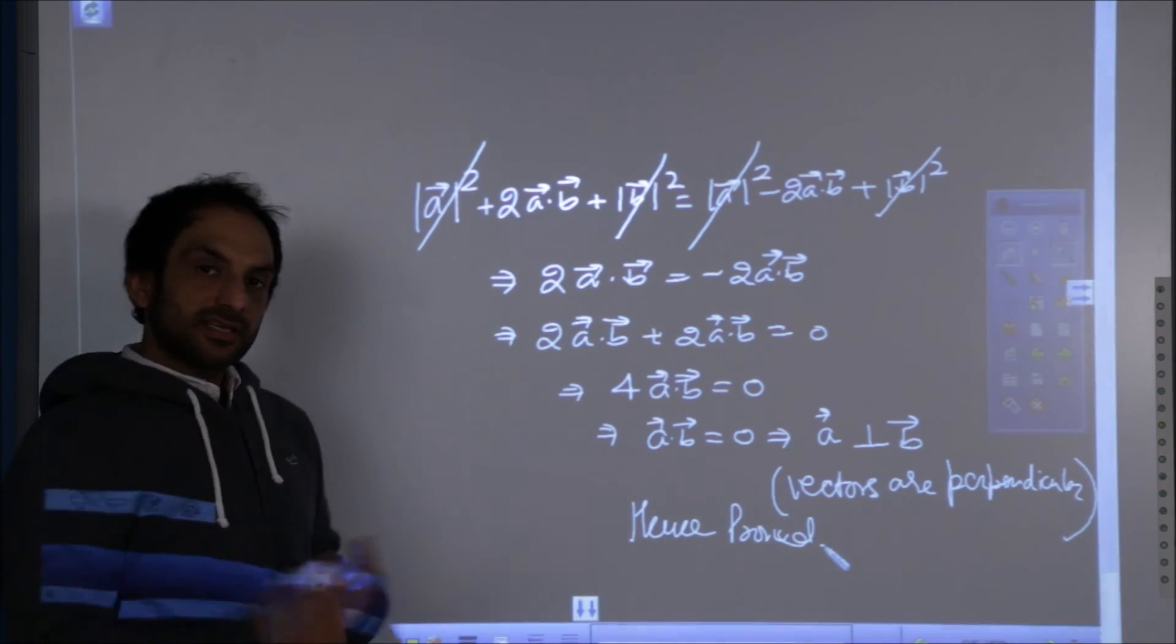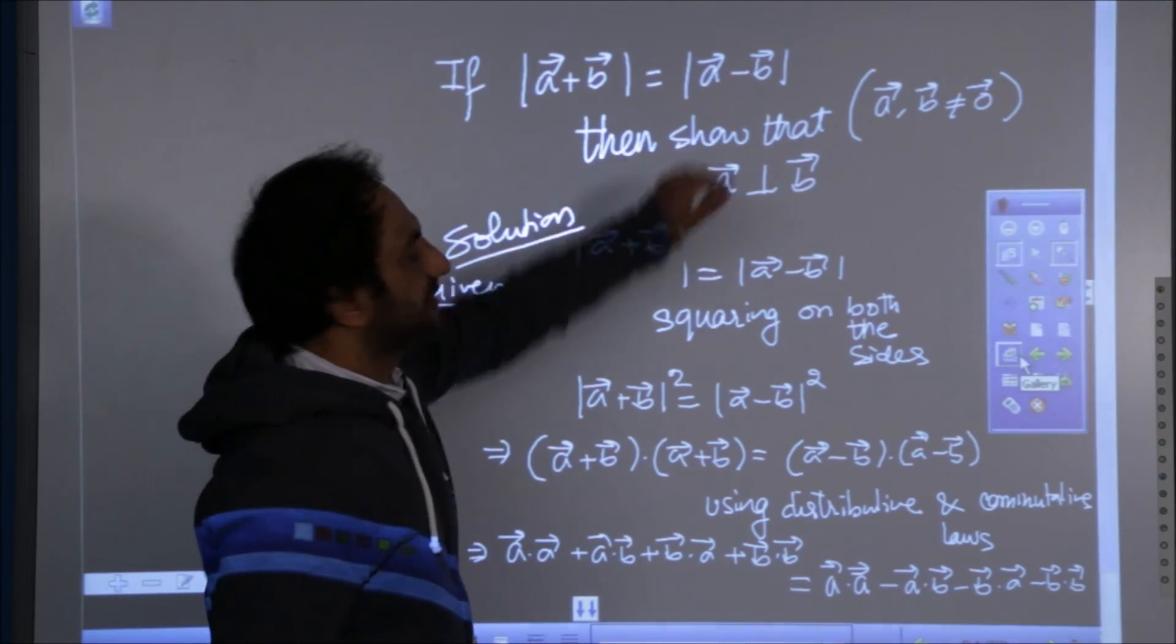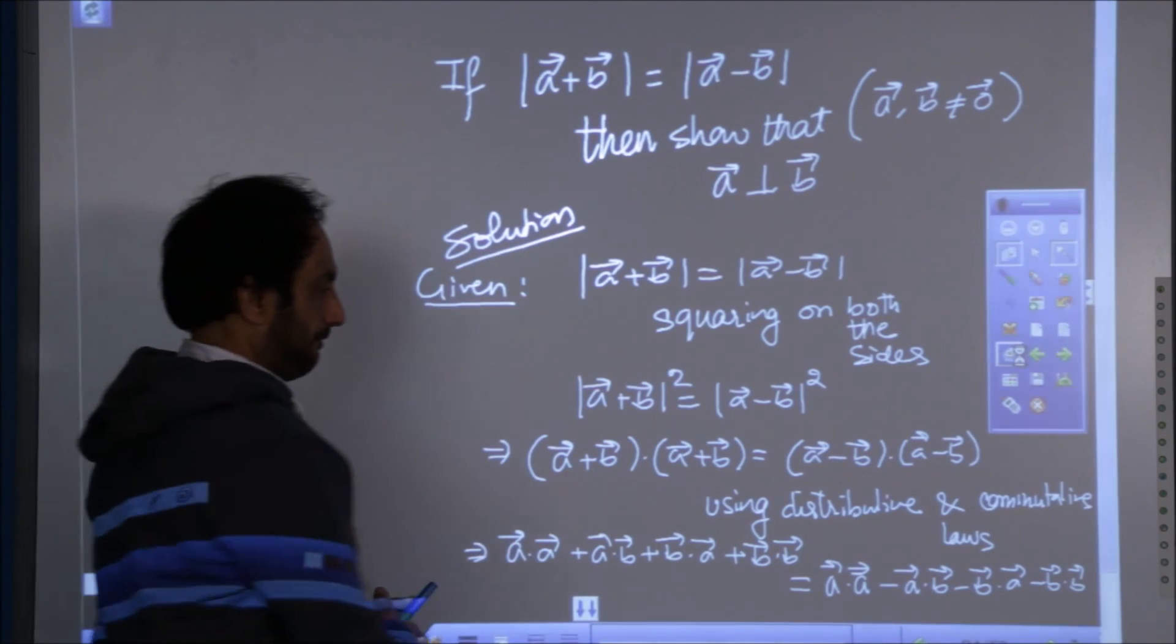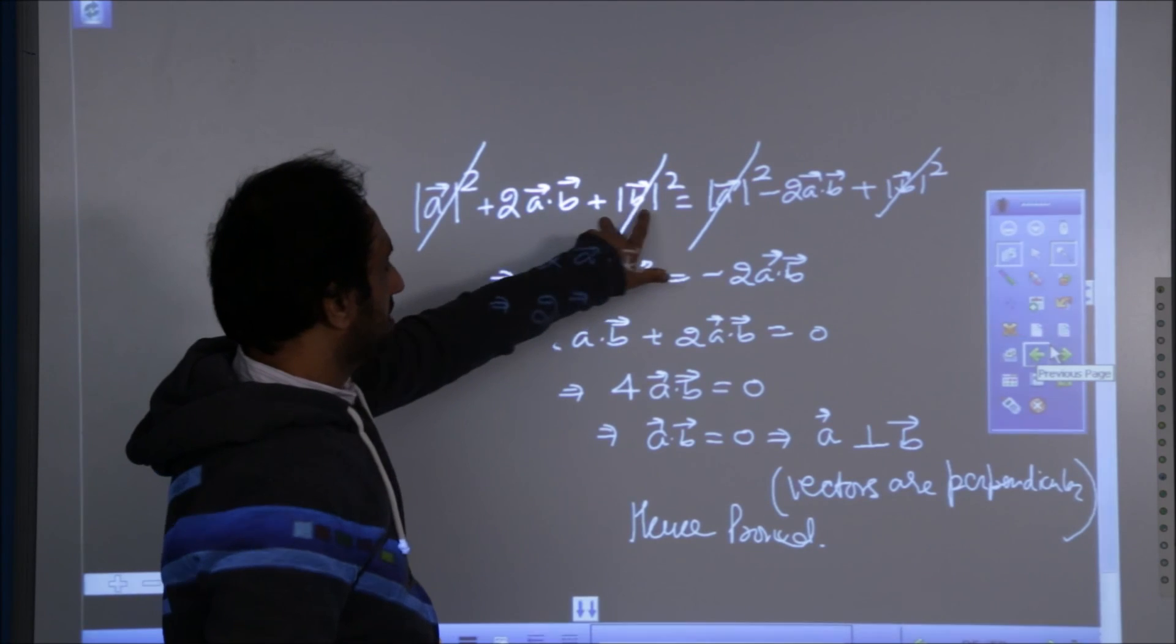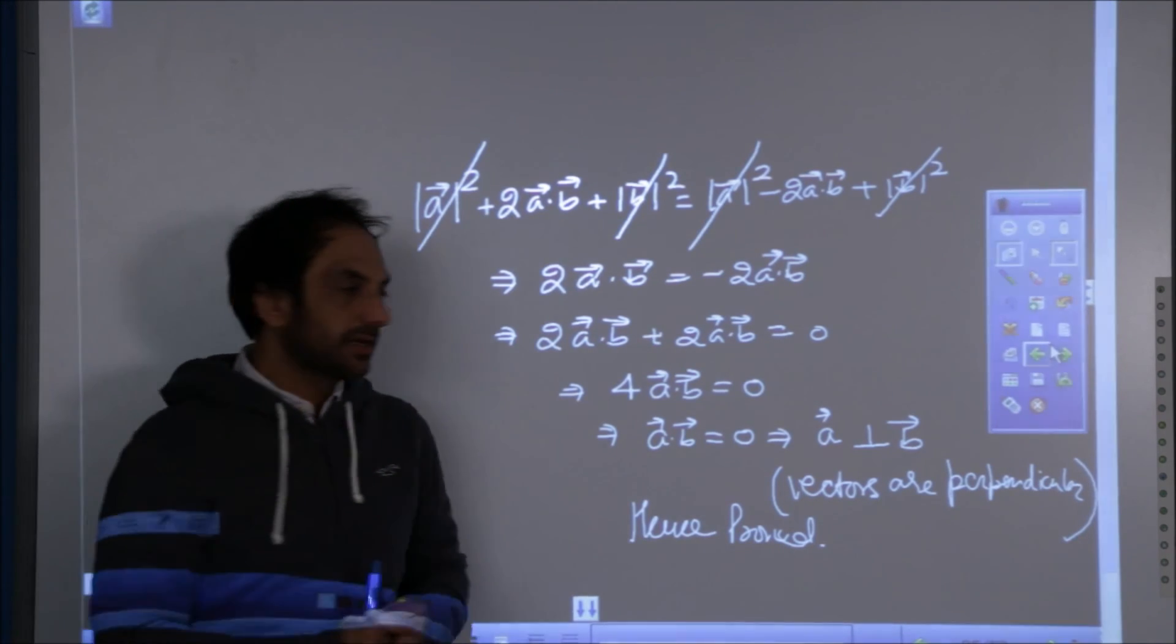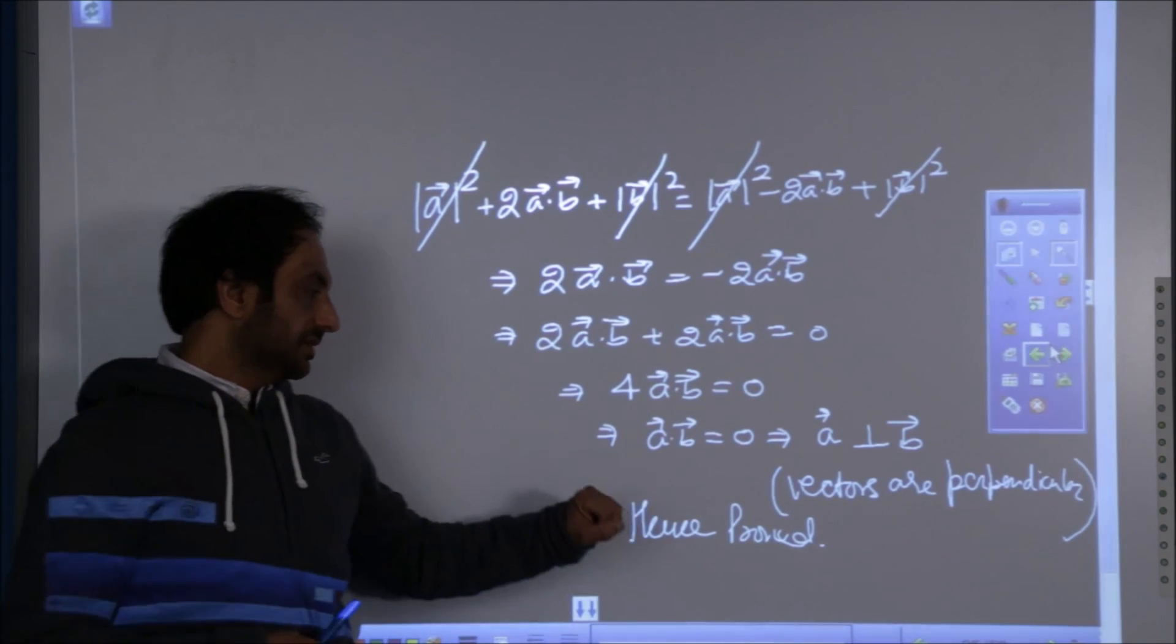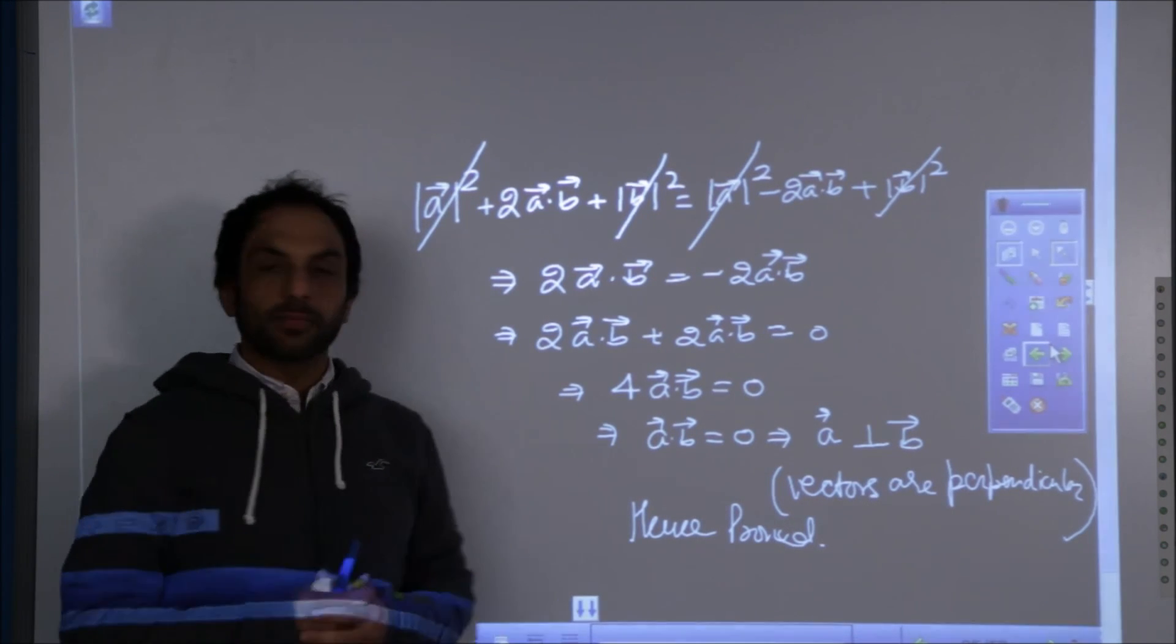This is very simple. Let us revise. We were given the magnitudes of the sum and the difference of two vectors. And the target was to prove that they are perpendicular. We did squaring. We expand them. And we got the expression mod a square plus two times of a dot b plus mod b square. And same way mod a square minus two a dot b plus mod b square. The modulus, the moduli on both the sides get cut. And we are left with four times of a dot b is equal to zero. Hence a dot b is equal to zero. And finally a is perpendicular to b. This is very simple and important question.